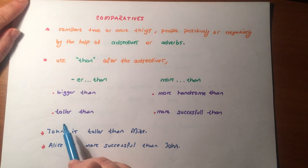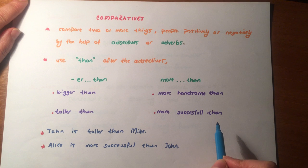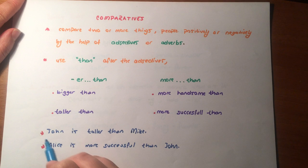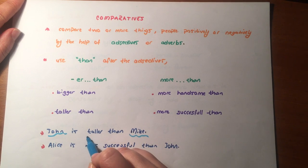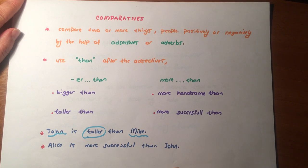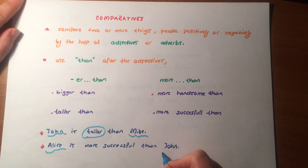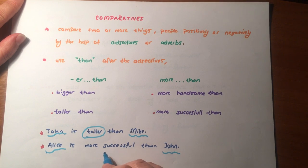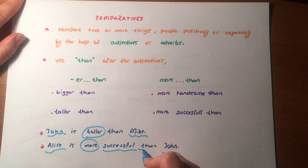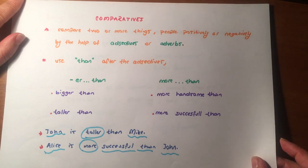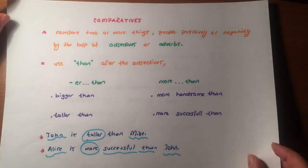What is the difference between them? Taller than. More successful than. John is taller than Mike — I compare John and Mike by the help of an adjective. Tall is the adjective. Who is taller? John is taller, so John is the first one and taller than the second one, Mike. Alice is more successful than John — I compare Alice and John. Alice is more successful, so I use 'more than'. It's comparative, and the adjective helps us to compare Alice and John in this sentence.